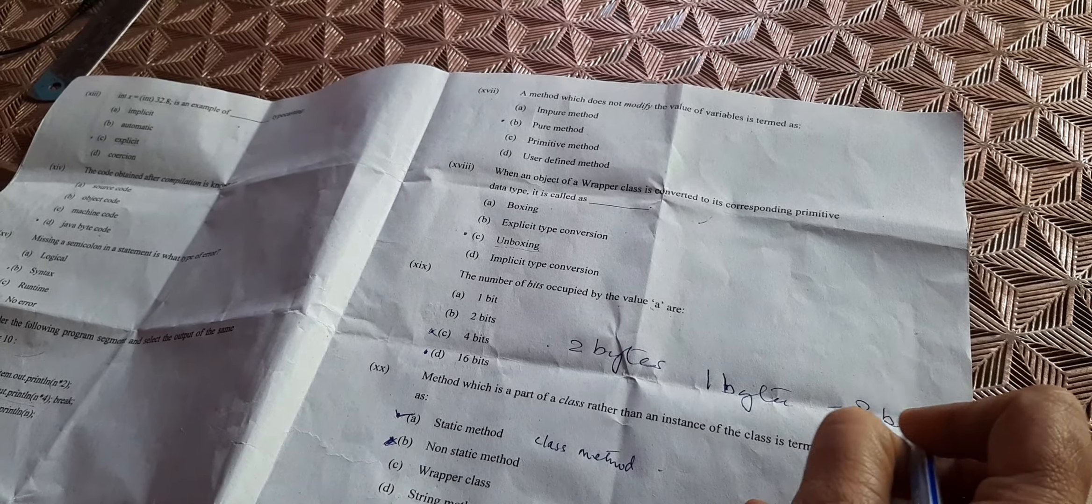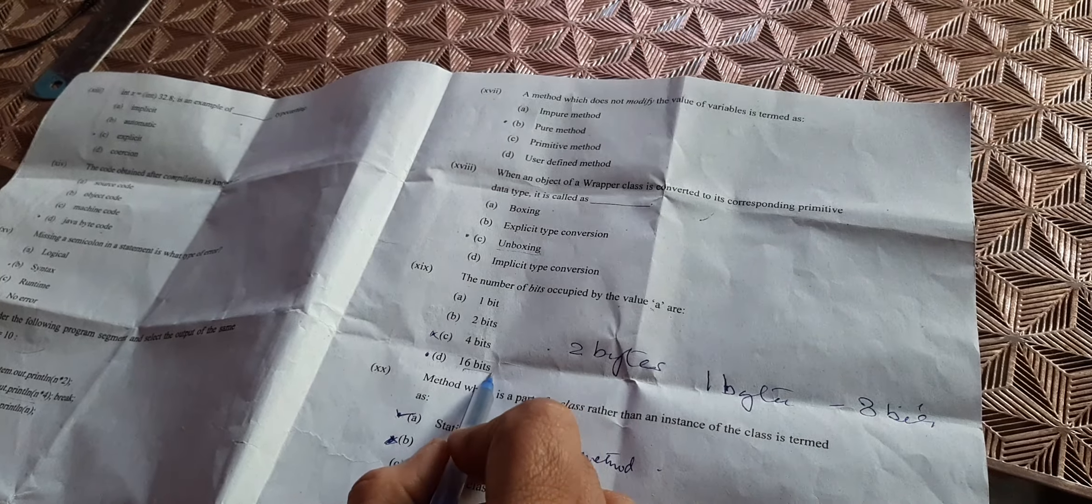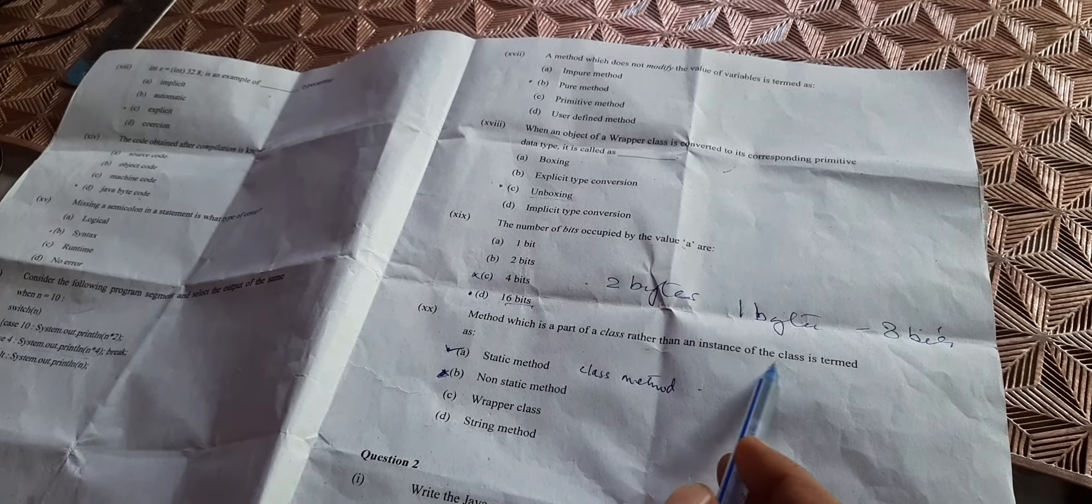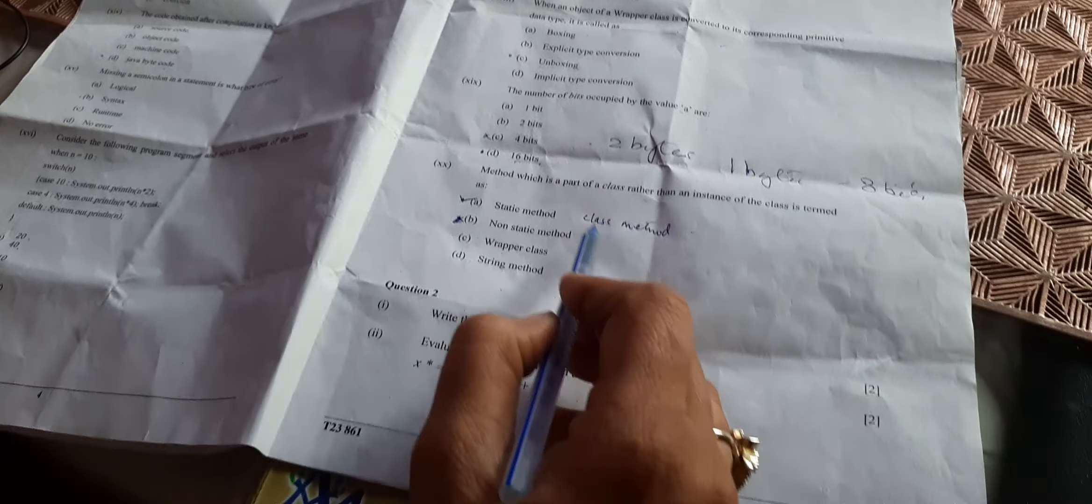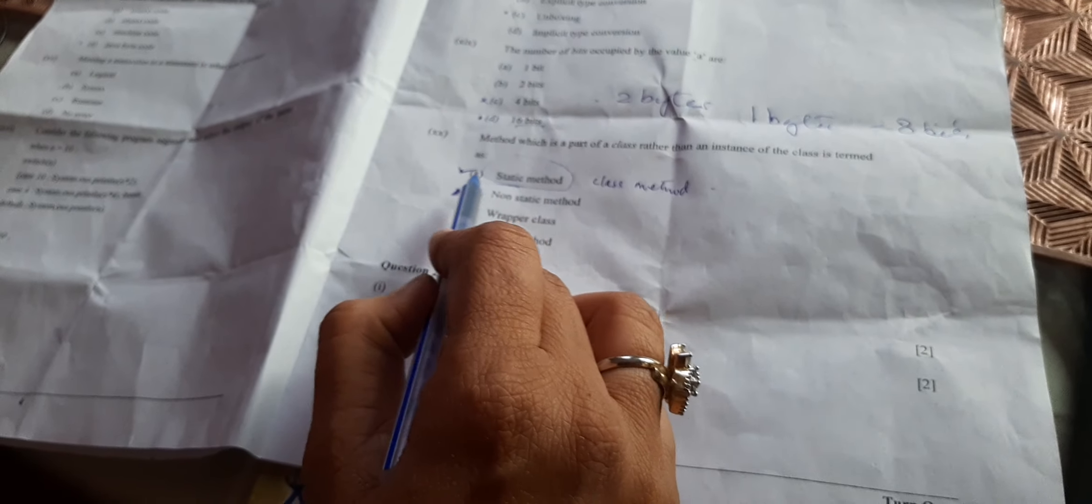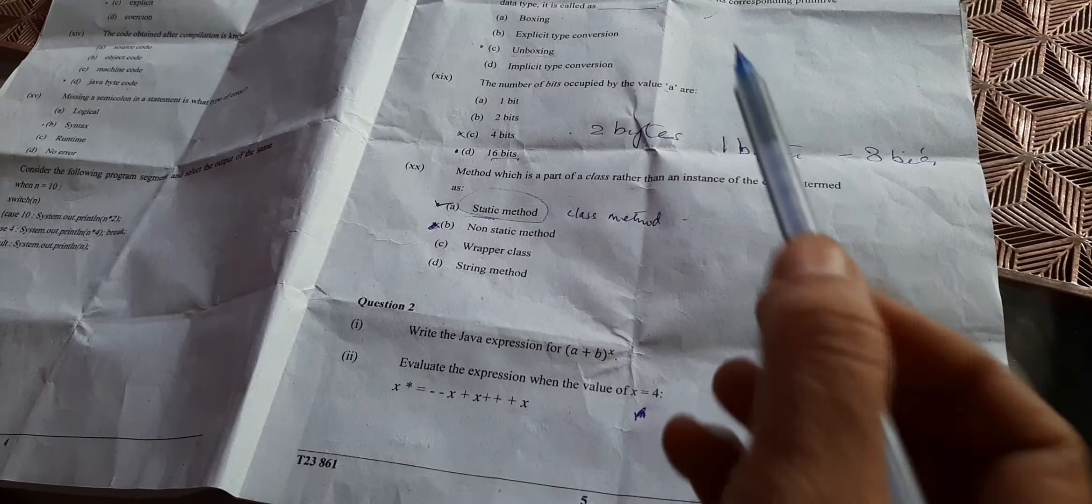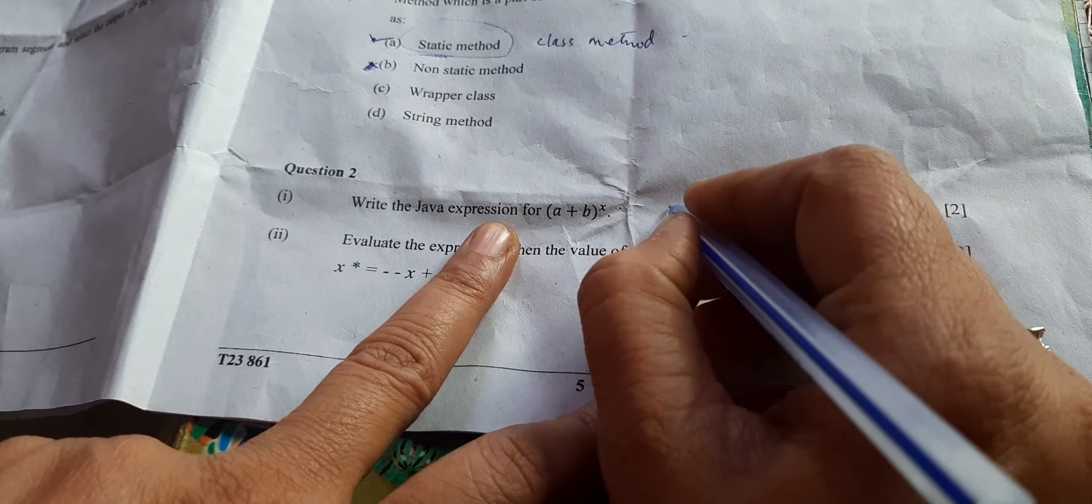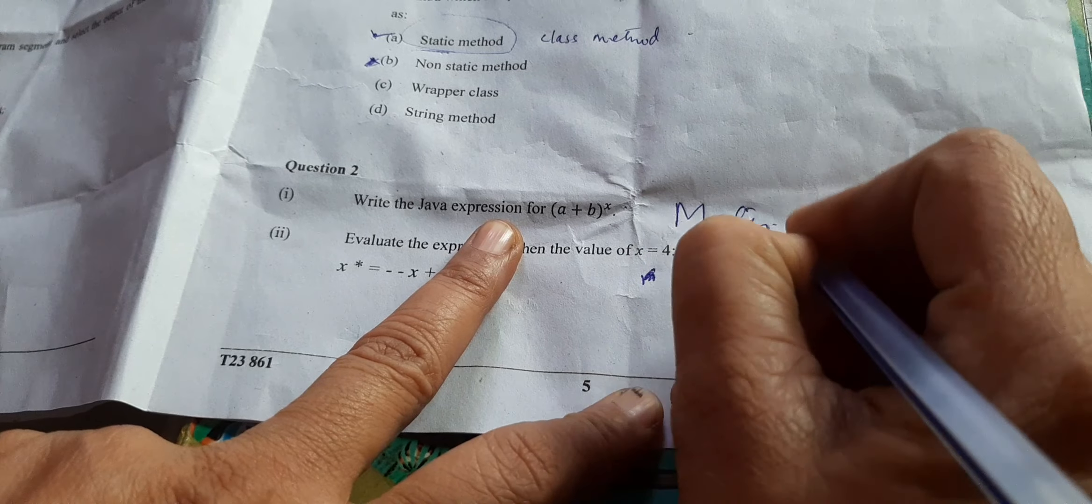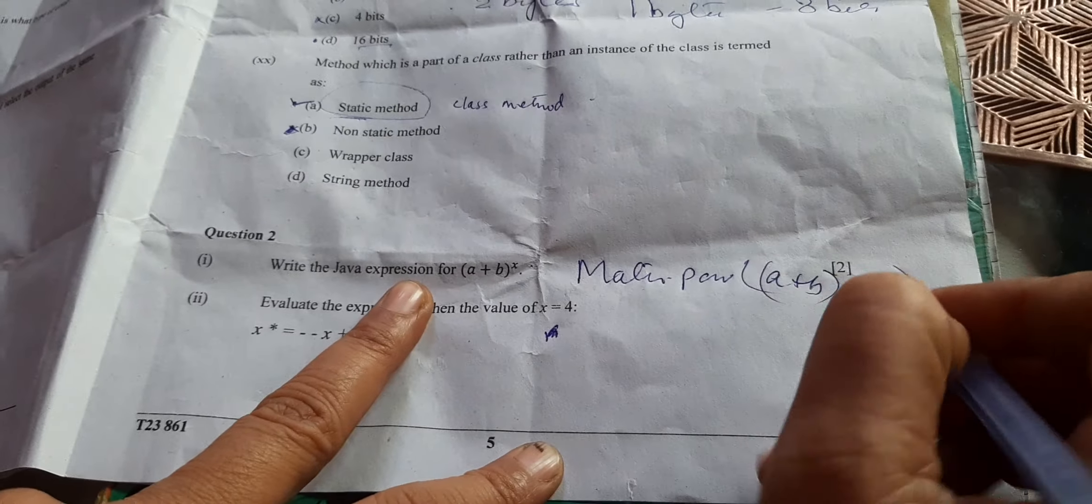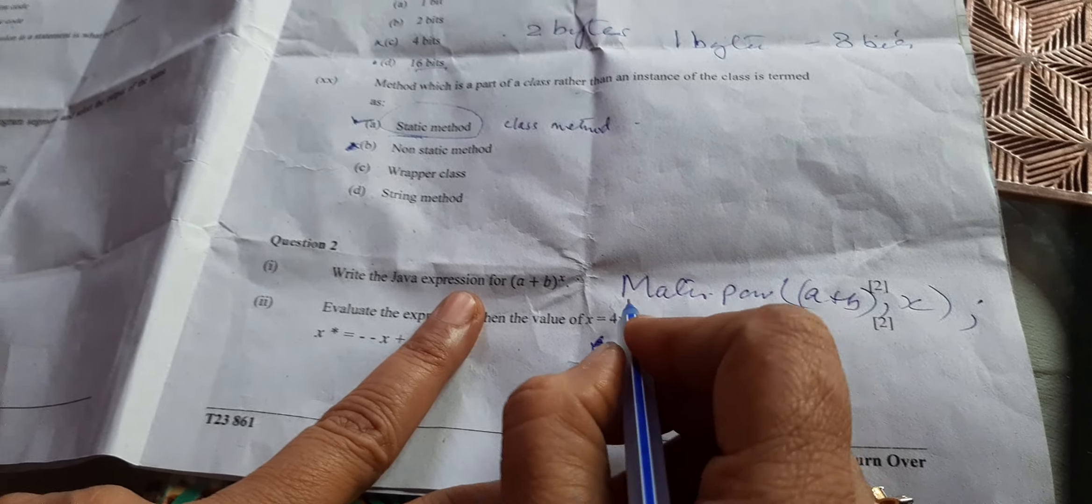The method which is part of a class rather than instance of a class - it is a class method. If you put static in front of the method, it will become a class method, so first option is correct. Write Java expression for this. Power is there, so we will write Math.pow in bracket (a+b), again in bracket, comma x, put semicolon. M should be in capital.